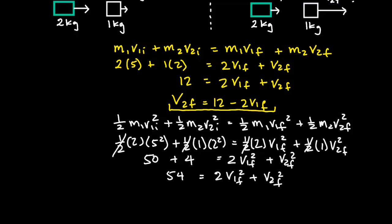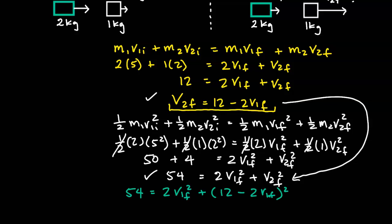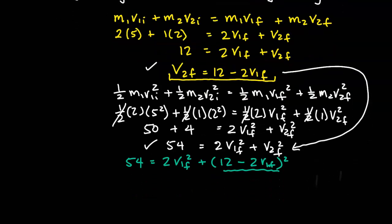Now we have two equations with two variables. We're going to take the expression for v2_final from the momentum equation and substitute it into the kinetic energy equation. Next we move all terms to one side to set the equation equal to zero. We also have a squared term on the right, so we're going to expand that out.